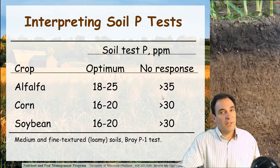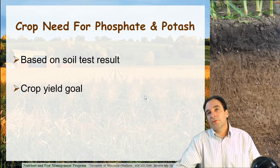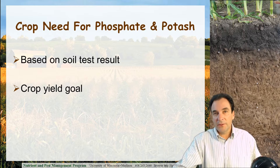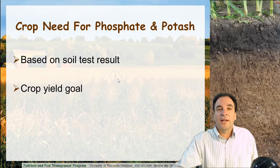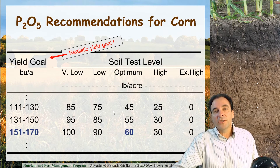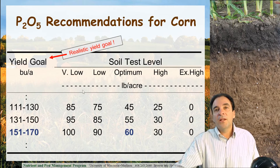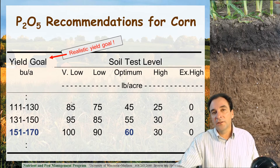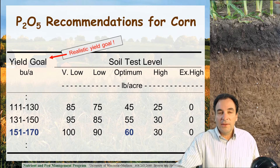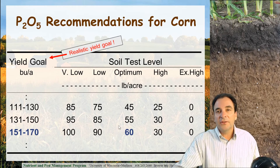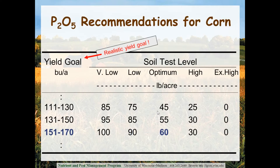We want to shoot for optimum and probably don't want to go much higher than our excessively high or non-responsive fields. Crop need for phosphorus, as well as for potassium, is based on two parameters: our soil test result and crop yield. The lower we are in soil test phosphorus, the higher the need for supplemental phosphorus fertilizer. If we're in the optimum soil test level, we're going to apply commercial fertilizer at a rate more or less equal to crop removal, with the goal of staying in the optimum range.